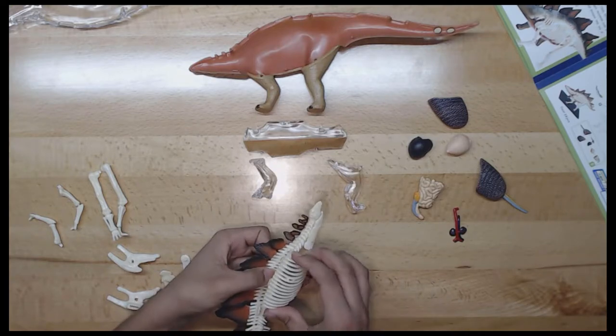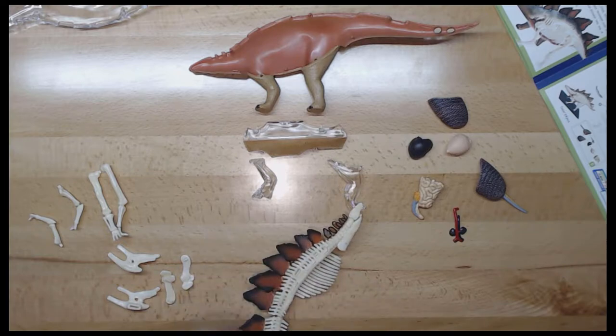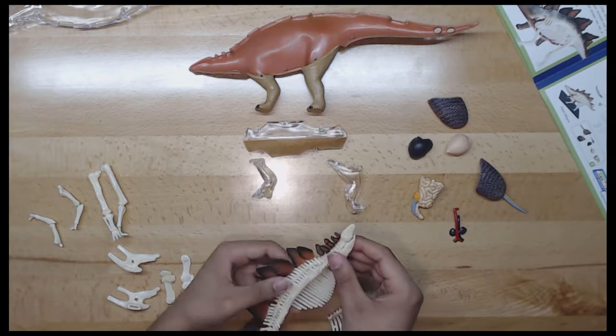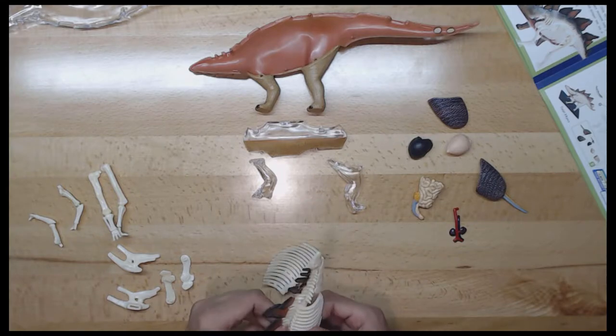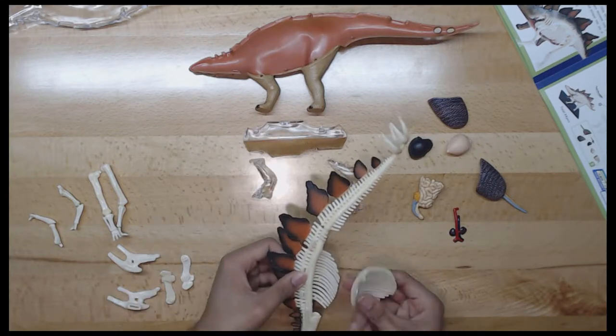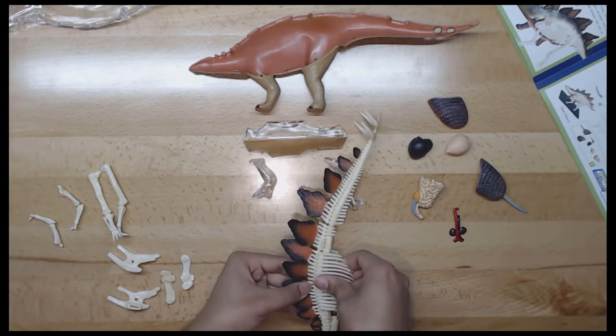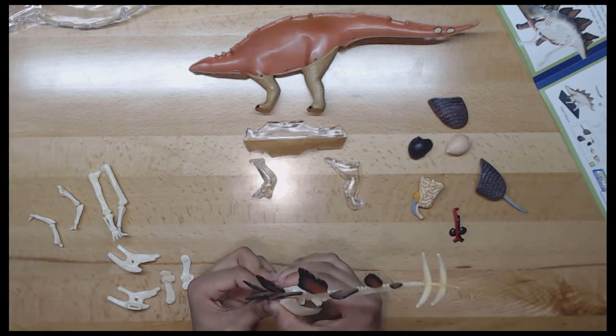Next is the stomach. Based on anatomy of the digestive system of living herbivores nowadays, Stegosaurus should have a large stomach and like many herbivorous dinosaurs, it swallowed small rocks as gastroliths to help mash the tough vegetable matter in its enormous stomach.